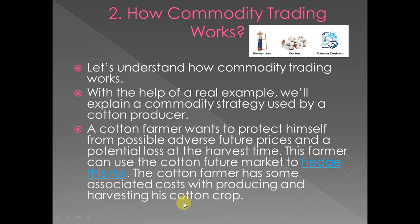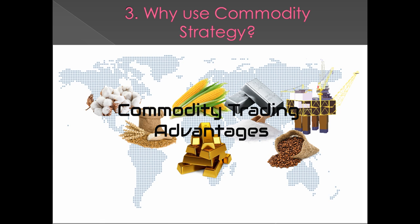The farmer can use the cotton futures market to hedge his risk. The cotton farmer has associated costs with producing and harvesting his cotton crop. He has some idea of what the future price will be, so he will make a contract with the buyer. Between the buyer and seller, a contract is made. The farmer then waits until he gets the product from the earth. Any risks are covered by the contract — this is the basic example of commodity trading.